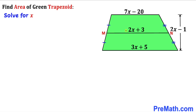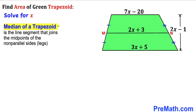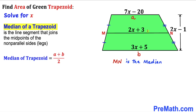In order to find the area of this green trapezoid, we must find the value of x first. Let's recall the median of a trapezoid — it is the line segment that joins the midpoints of the non-parallel sides. Here, m and n are the midpoints of those side lengths. Labeling the top base as a and the bottom as b, the median mn equals (a plus b) divided by 2. This is the formula we will be using.